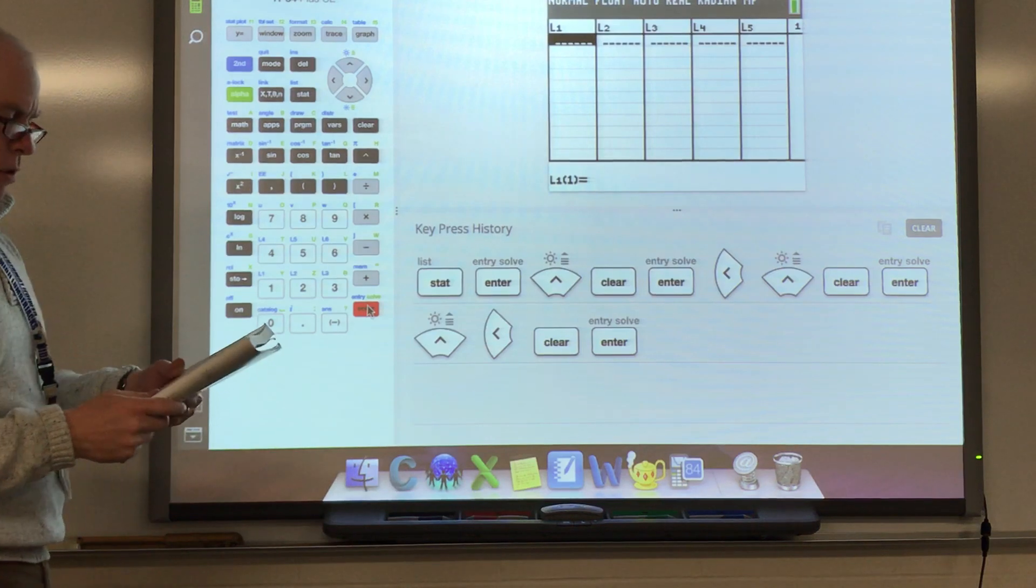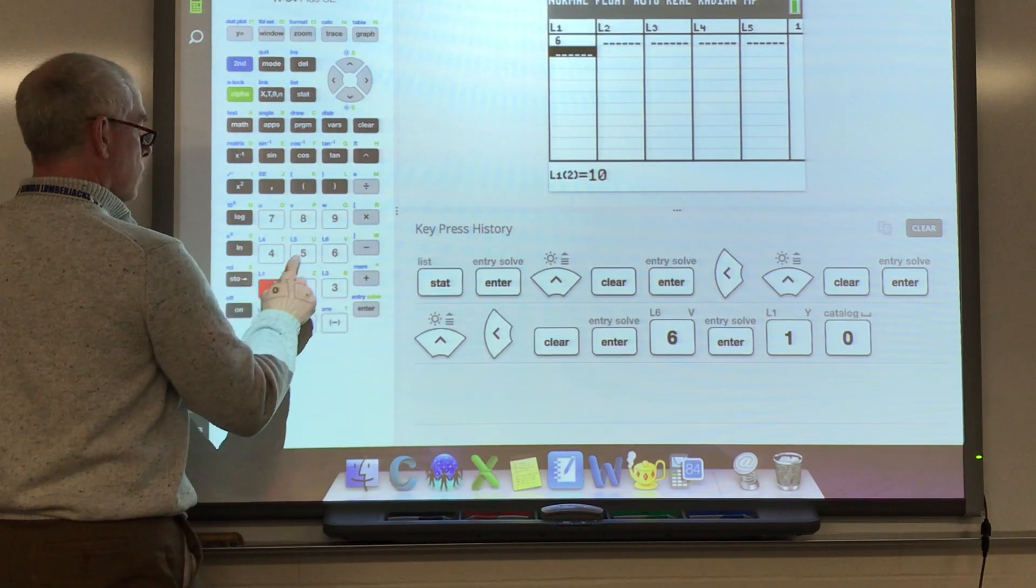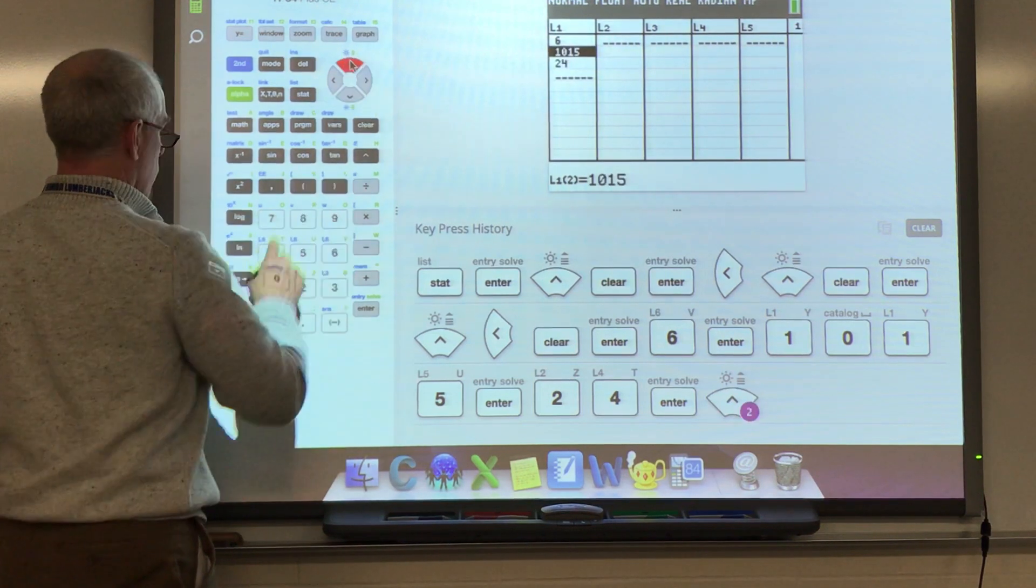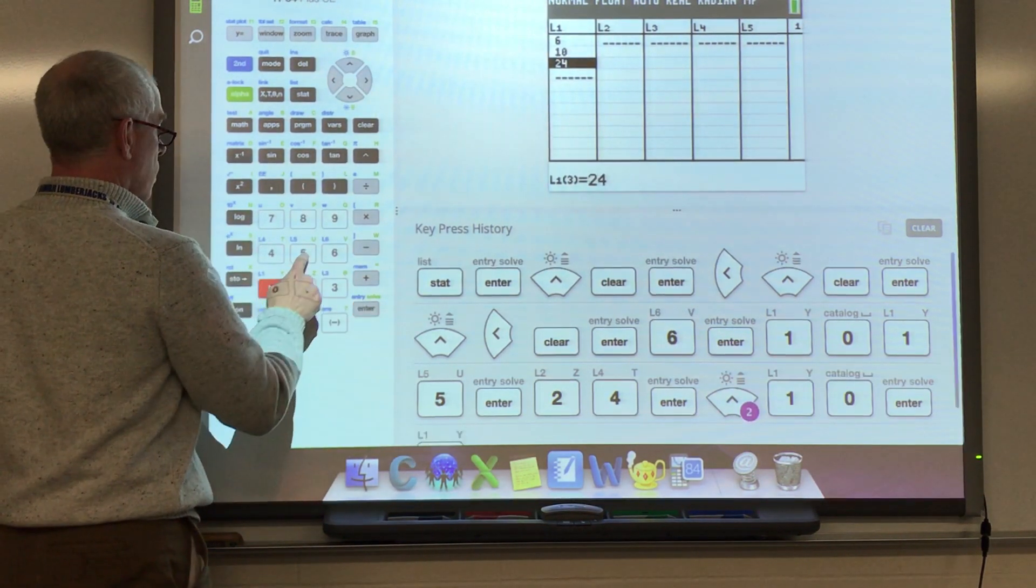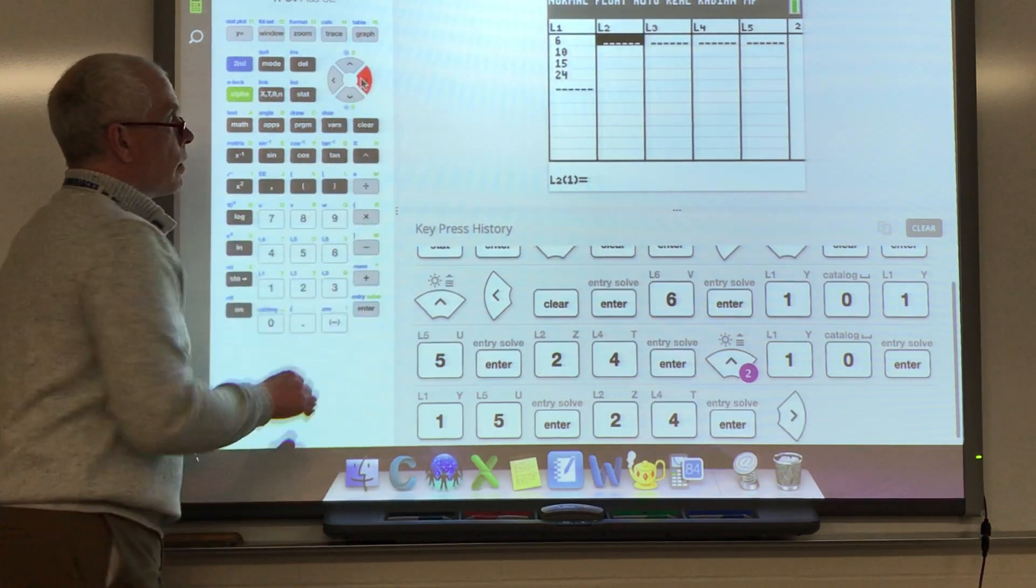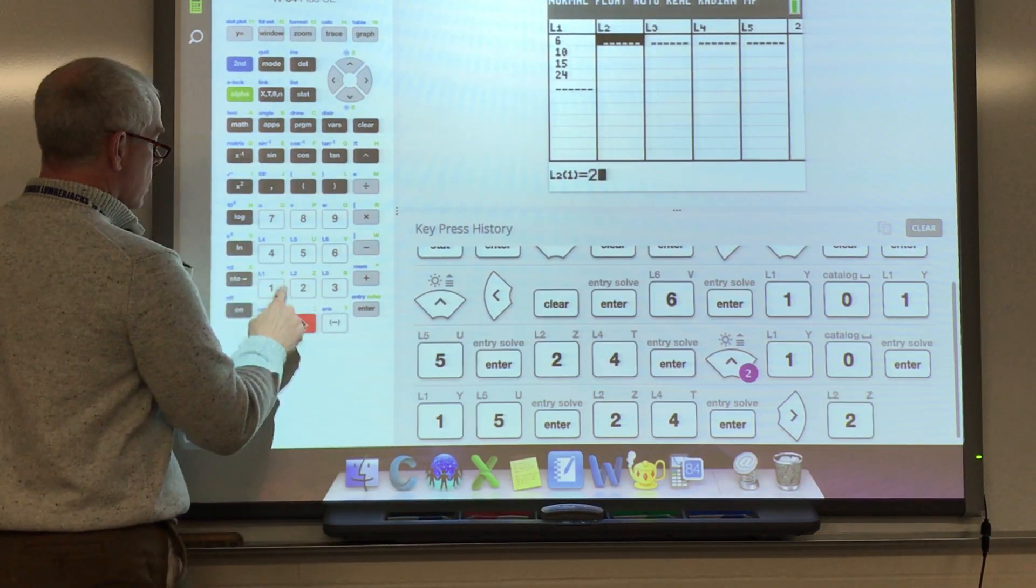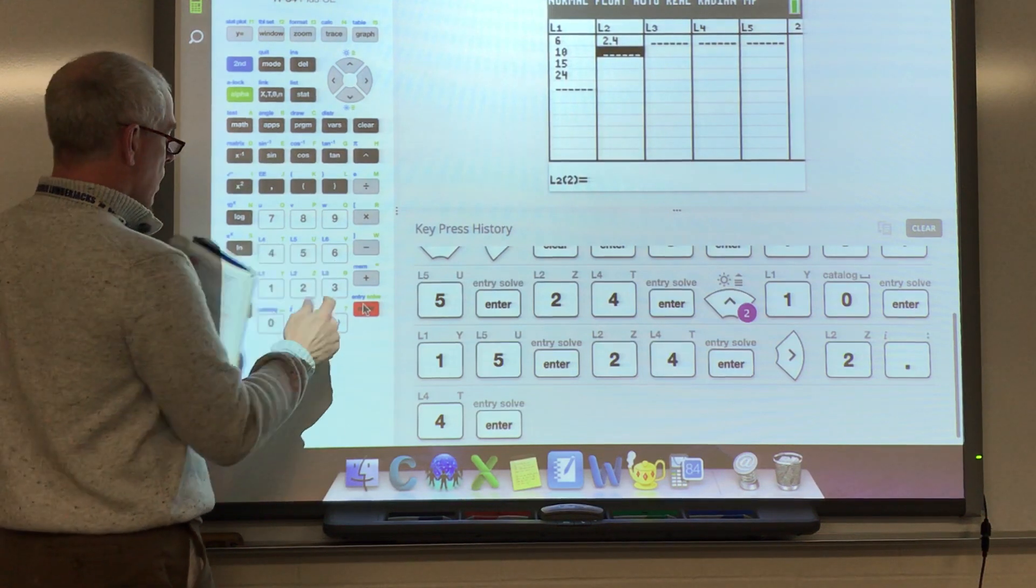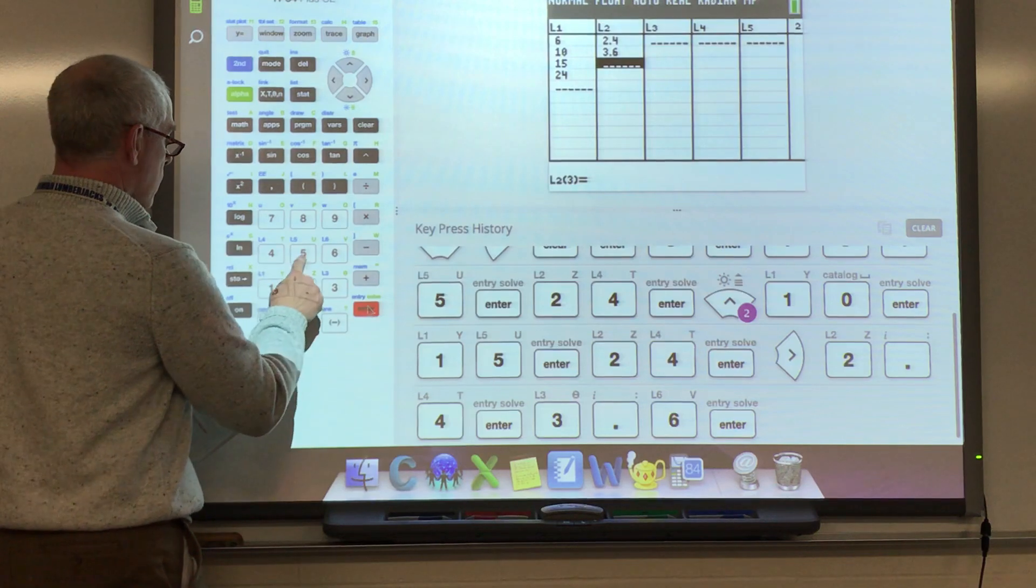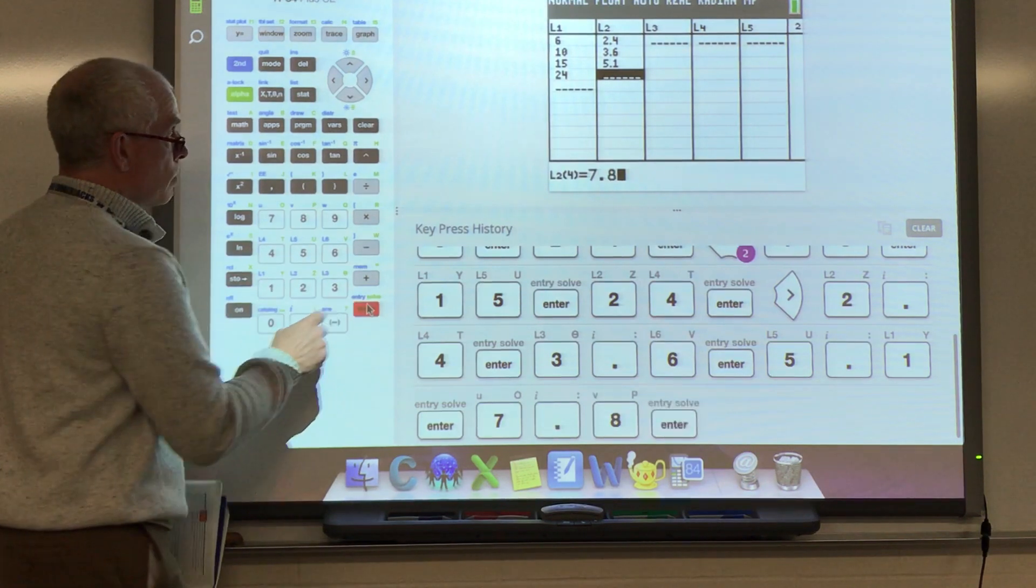So in list one I'm going to put the serving size: 6, 10, 15, and 24. And then the corresponding price with it. So 6 nuggets cost $2.40, 10 nuggets cost $3.60, 15 nuggets was $5.10, and 24 nuggets was $7.80.